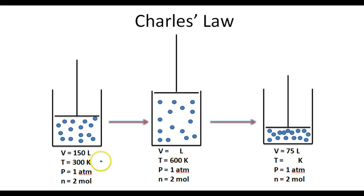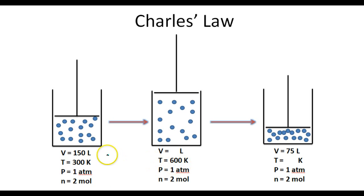What happens to the volume of the gas in this cylinder if the temperature should happen to double? Well, according to Charles' Law, if you hold the pressure constant, then the volume and temperature of that gas are directly proportional. And if the temperature is doubling, then the volume will double as well, and we will end up with a volume of 300 liters right here.